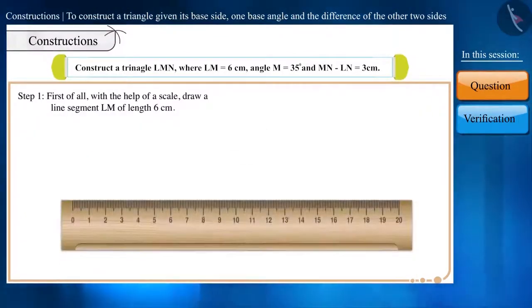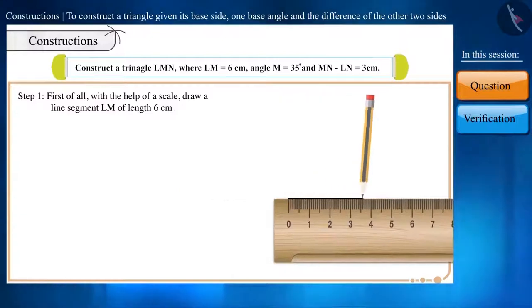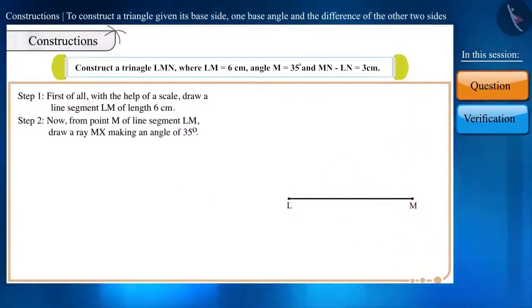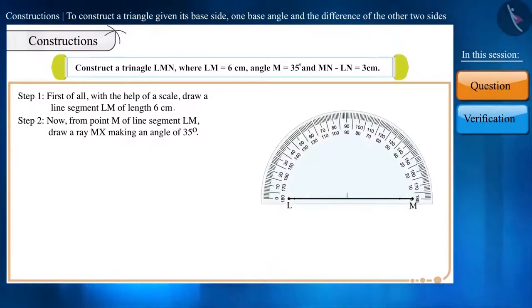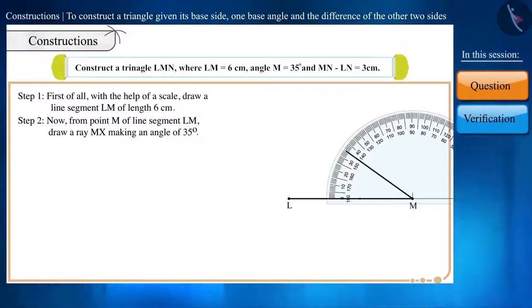Step 1. With the help of a scale, draw a line segment LM of length 6 cm. Step 2. From point M of line segment LM, draw a ray MX making an angle of 35 degrees.